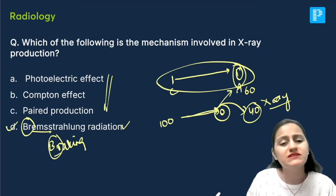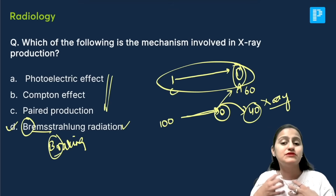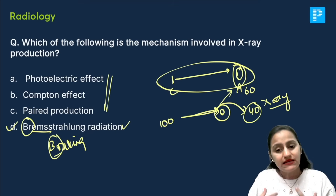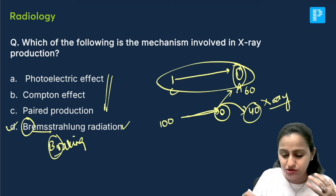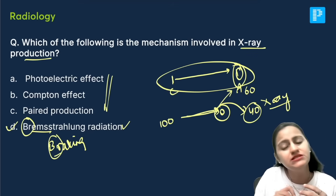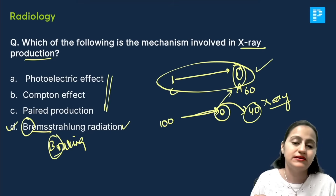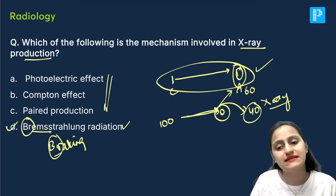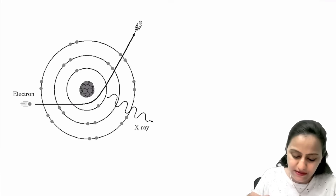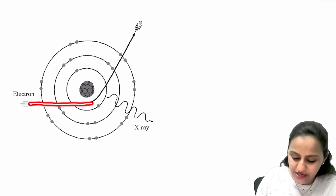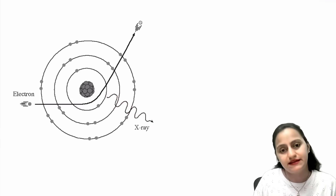Photoelectric effect, Compton effect, and pair production are what happen when the x-ray interacts with matter in the body — that is after the x-ray comes out. The question is about x-ray production, so the answer is bremsstrahlung radiation along with characteristic radiation. The image shows the electron beam going straight, then being deflected, and emitting the x-ray as bremsstrahlung radiation.